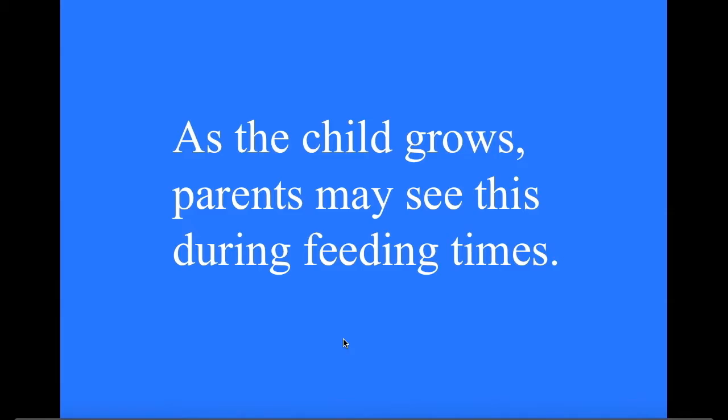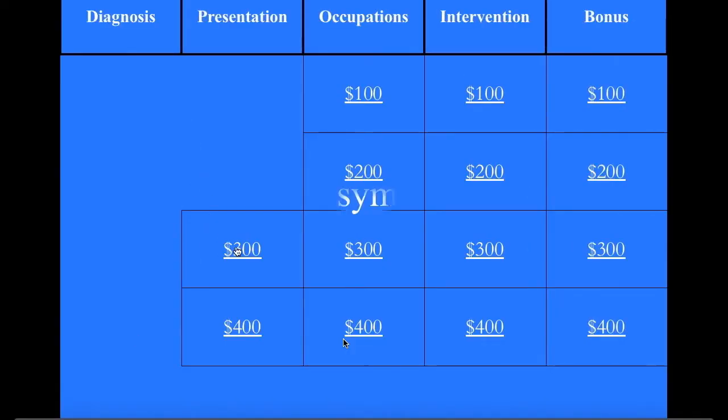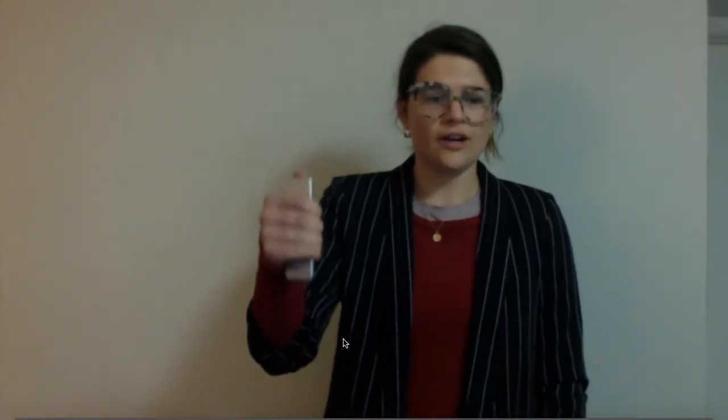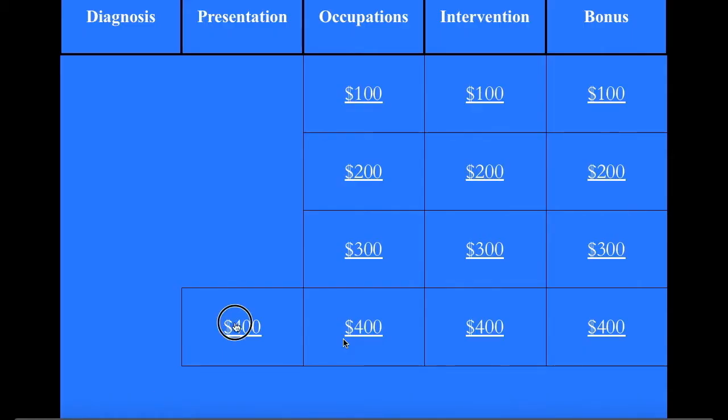Presentation for 200: As the child grows, parents might see this during feeding times. What is aversion to texture or highly specific food preferences? Presentation for 300: These are typically the most visible symptoms. What are repetitive behaviors and interests, including movements, habits, and extreme routines?